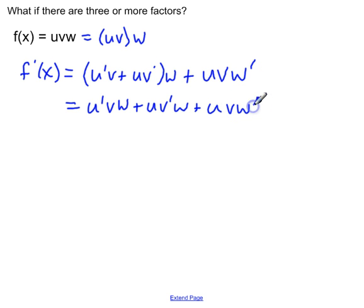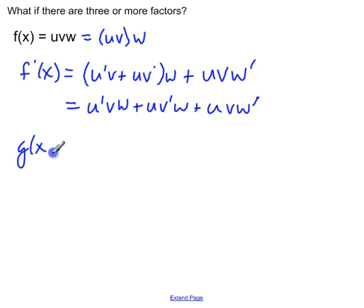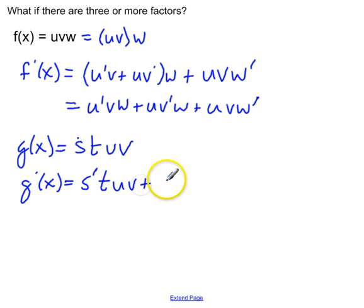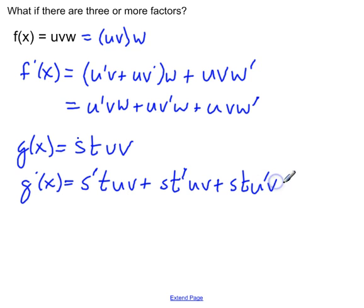If you notice the pattern here, the prime marches from left to right through the products. So if I had g of x equals s t u v, then g prime of x would be s prime t u v plus s t prime u v plus s t u prime v plus s t u v prime.